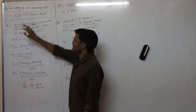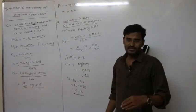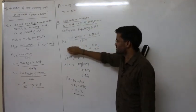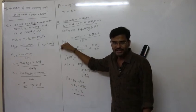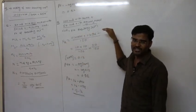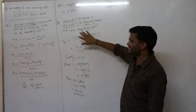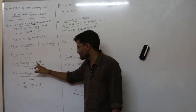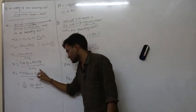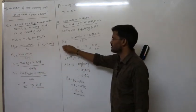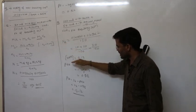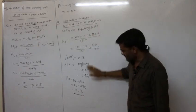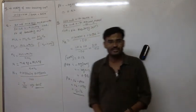This is Method 3 for calculating pH of acid mixed with acid, or base mixed with base. When such solutions are given, first find the resultant normality using: NR = (N1·V1 + N2·V2) / (V1 + V2). If molarity is given, use: (M1·V1·n₁ + M2·V2·n₂) / (V1 + V2). Then substitute the resultant normality into the pH or pOH formula to find the pH.